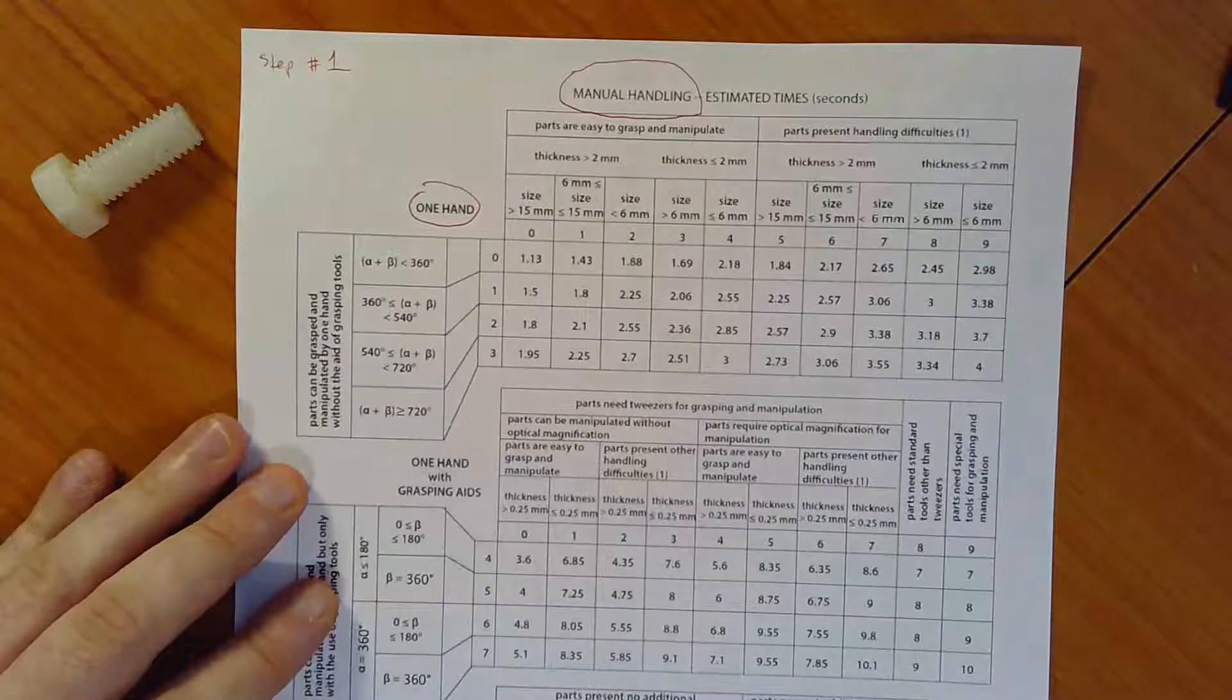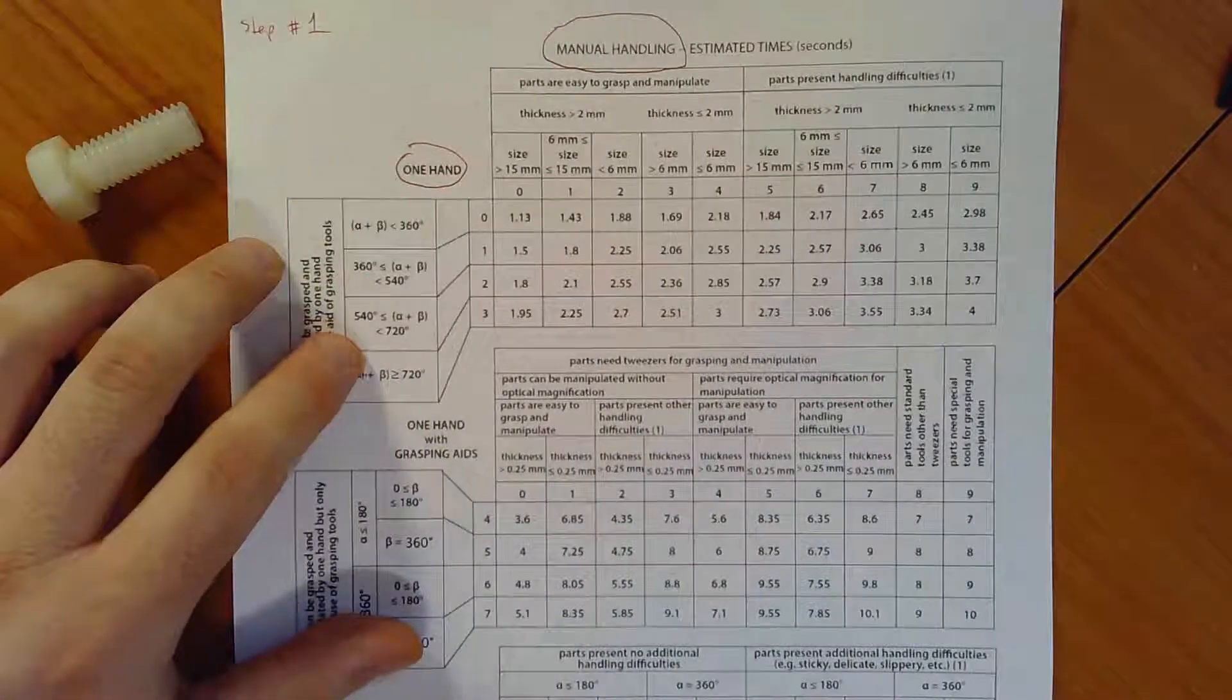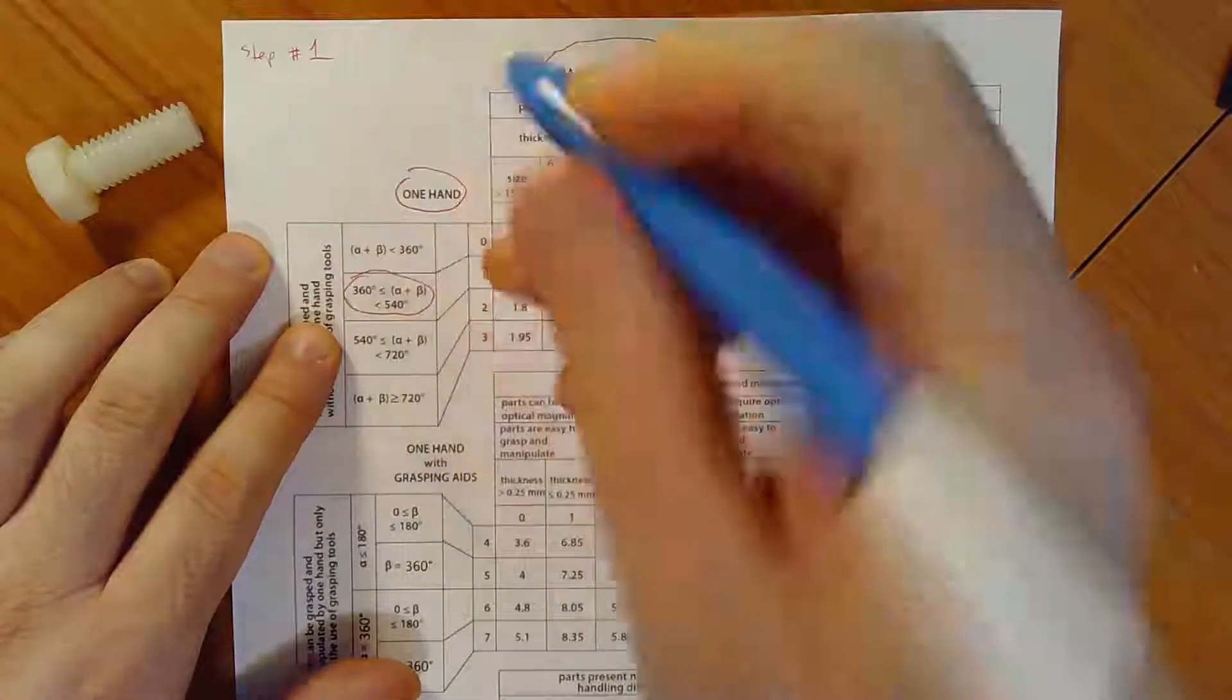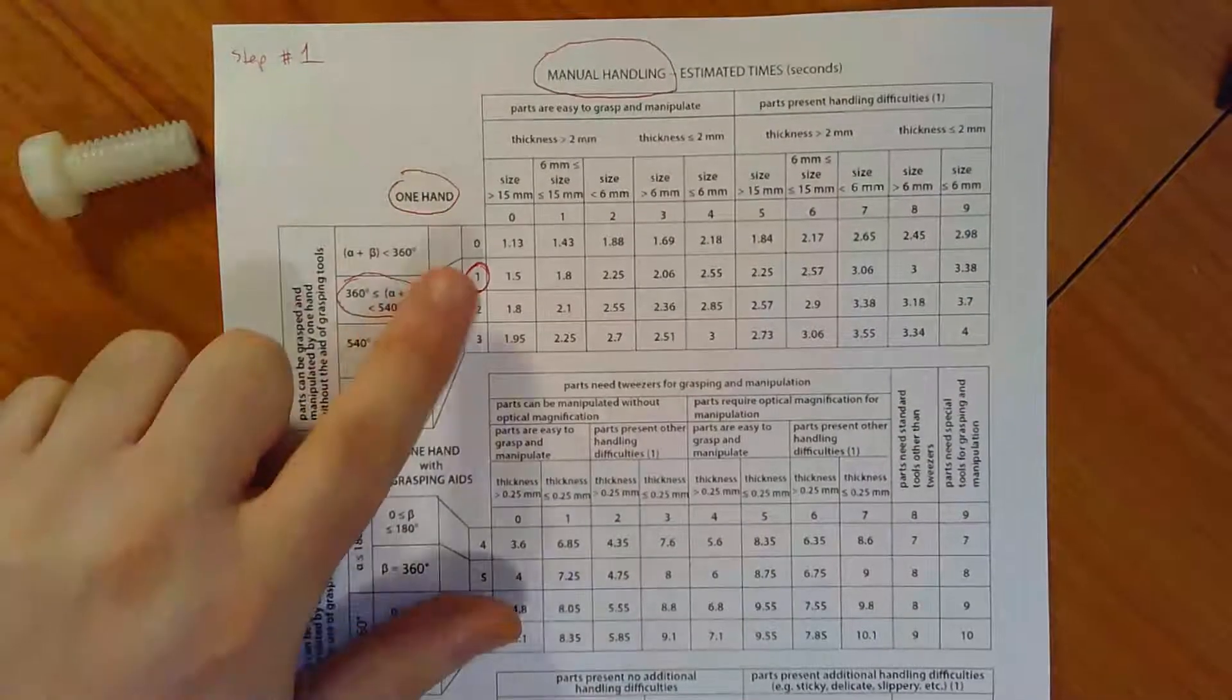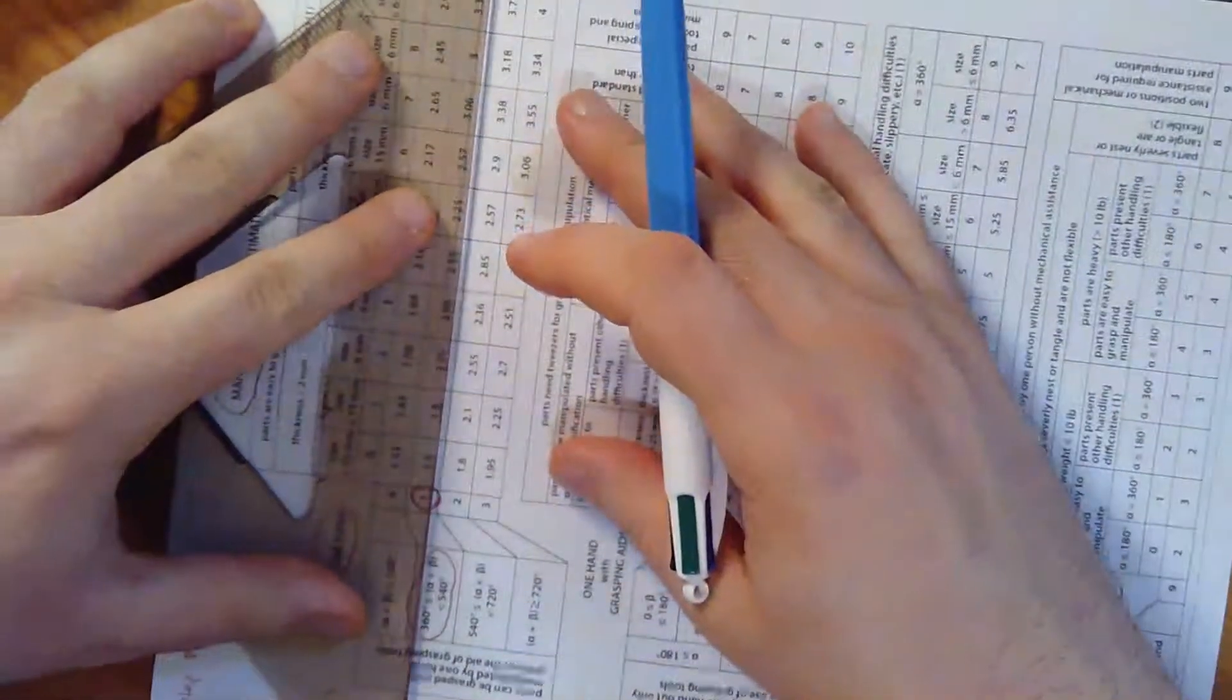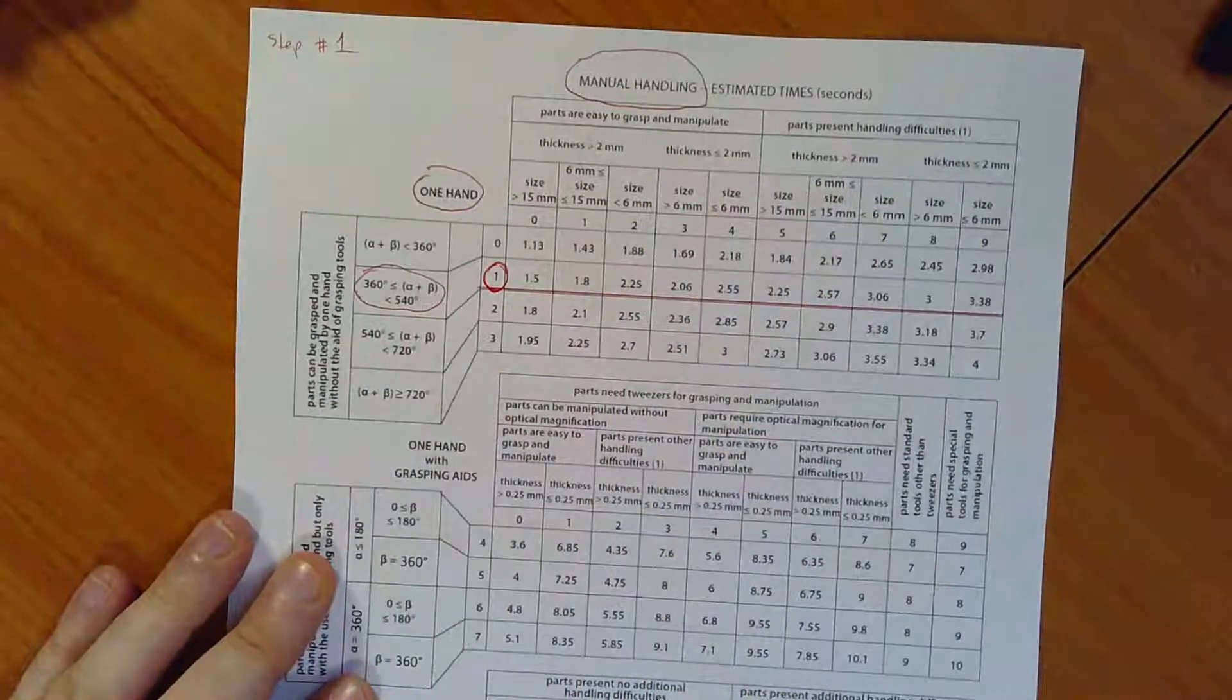I can pick this up with one hand. I don't need tools to pick it up. So I'm going to circle one hand here, which puts me in the top section of this manual handling table. The next thing that I need to determine is the sum of my symmetry angles. So I've got a couple of options. Alpha beta is less than 360. Alpha beta is somewhere between 360 and less than 540. Alpha beta is 540 but less than 720 or alpha plus beta is greater than 720. Well, we just calculated that alpha plus beta is 360. So I'm going to be right here.